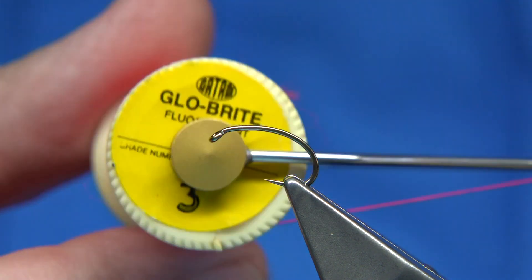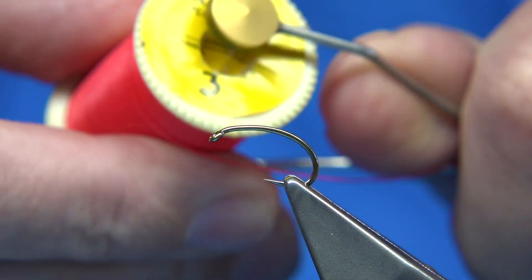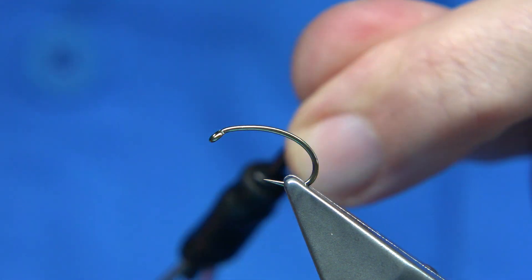I'm going to start off using a floss for the thread. This is Glowbrite number three, it's just a nice fine floss that we can get.